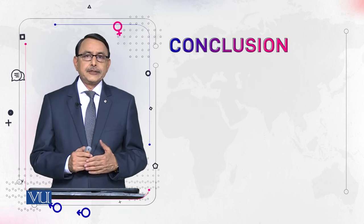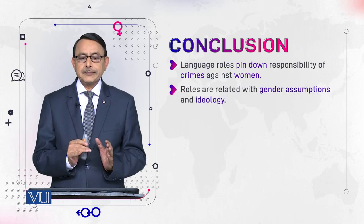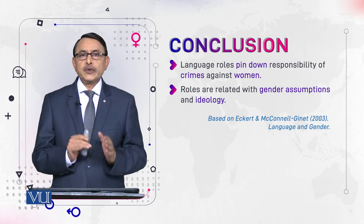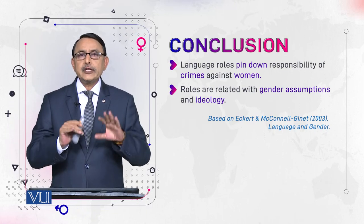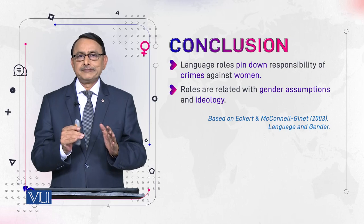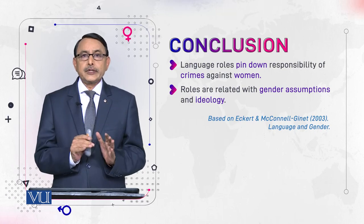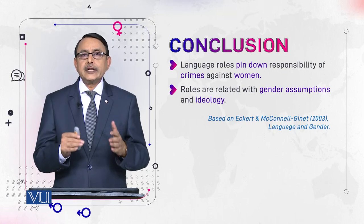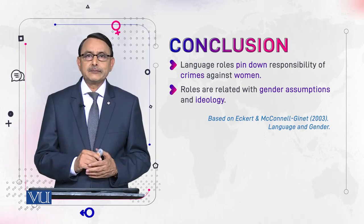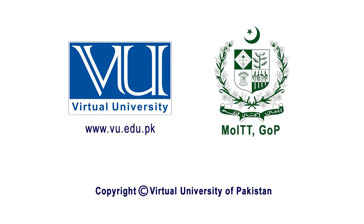So we conclude that language roles pin down responsibility for crimes against women overall. How you place different participants in a sentence, according to the action process contained in the verb, reveals who is being made responsible for what. This is the conclusion of this module.